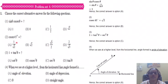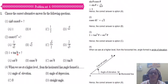Cosec 45 degrees is root 2, so the correct option is B. Next, 1 plus tan square theta equals sec square theta, so the correct option is C.